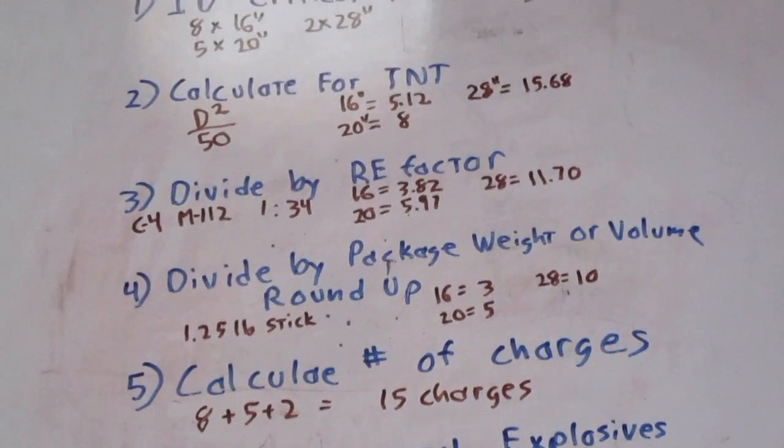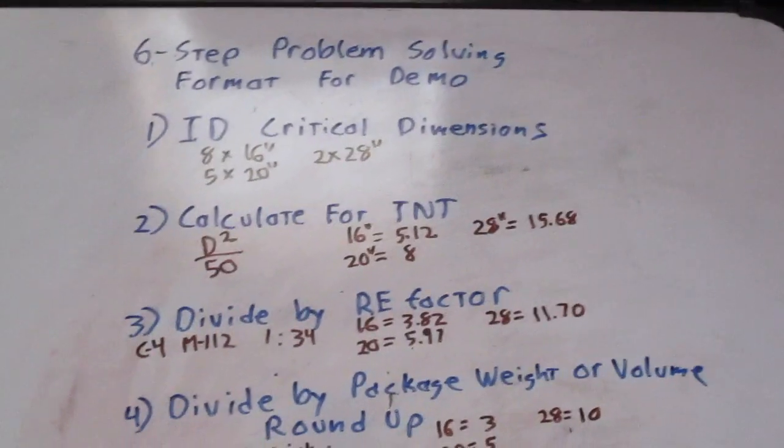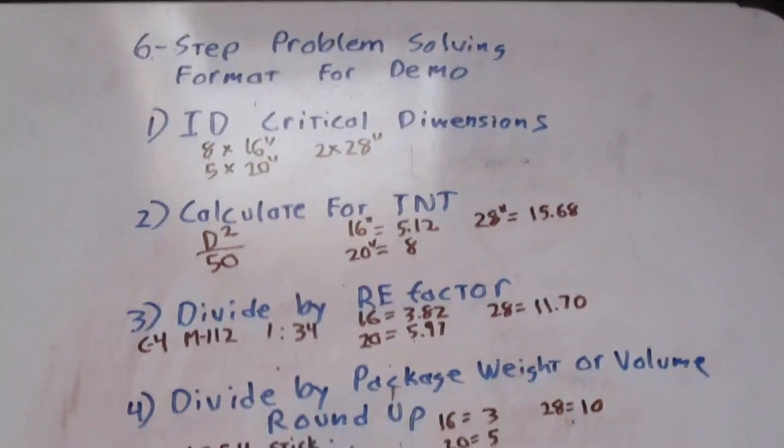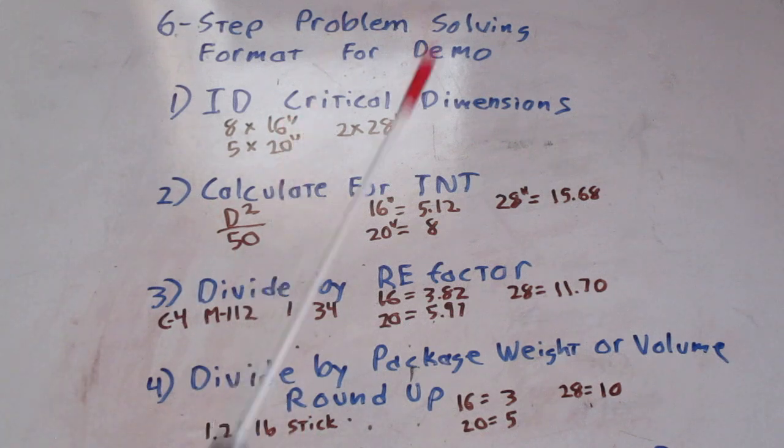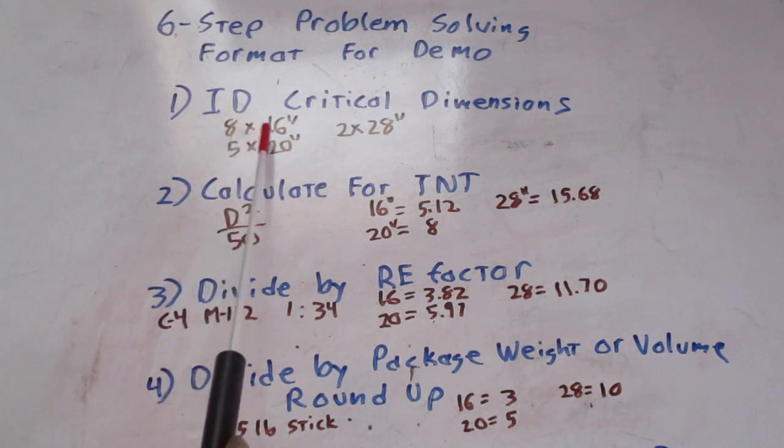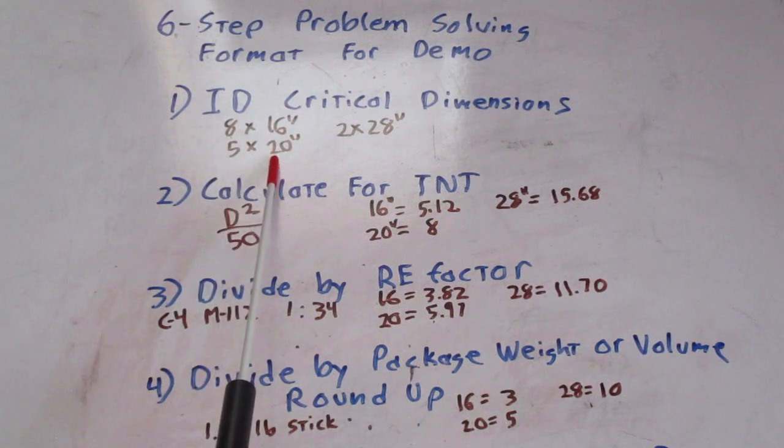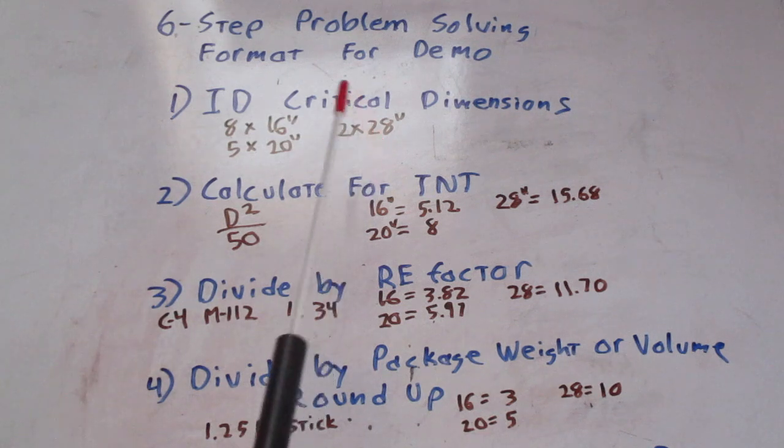Now, the calculation I got written out here for you is for the abatis. In the particular one we're going to use for this example, we're going to say we have, and you're going to round on your diameters of the trees, eight trees that are 16 inches in diameter, five trees that are 20 inches in diameter, two trees that are 28 inches in diameter.